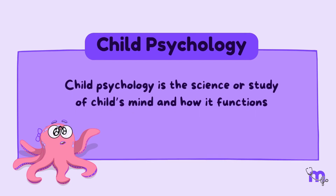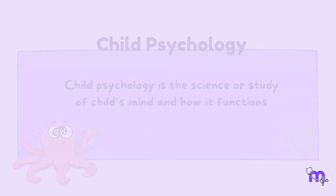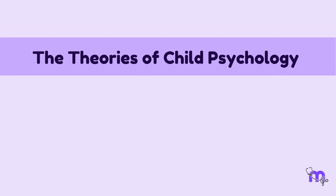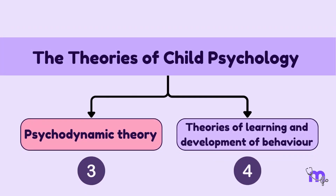Child psychology is the science or study of a child's mind and how it functions. The theories of child psychology can be broadly classified into two groups.